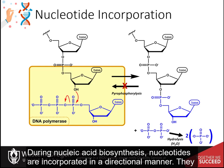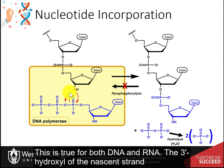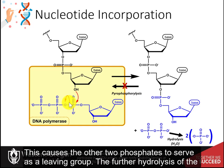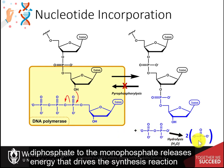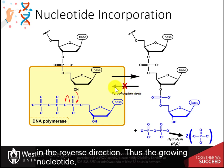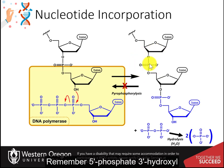During nucleic acid biosynthesis, nucleotides are incorporated in a directional manner — they can only be added to the 3' hydroxyl side of the nucleic acid strand. This is true for both DNA and RNA. The 3' hydroxyl of the nascent strand mediates nucleophilic attack on the phosphorus of the first phosphate position, causing the other two phosphates to serve as a leaving group. The hydrolysis of the diphosphate to monophosphate releases energy that drives synthesis forward, keeping the reaction from reversing. Thus, the growing nucleotide is always built in the 5' to 3' direction. Remember: 5' phosphate, 3' hydroxyl.